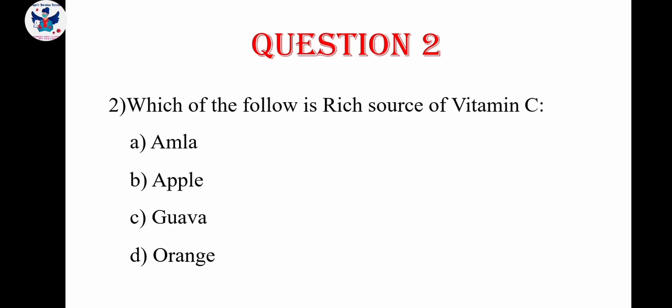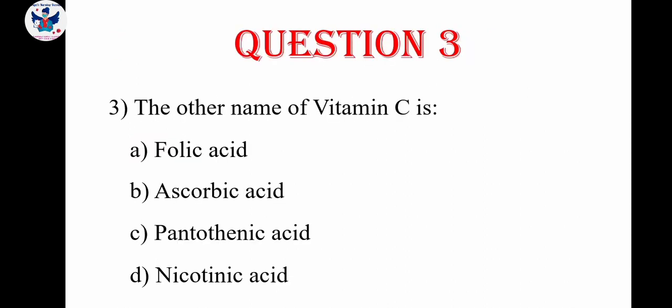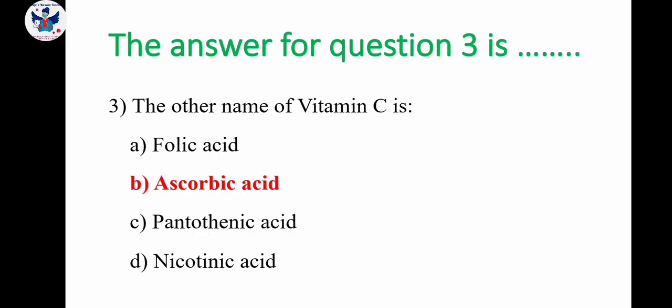Second question: which of the following is a rich source of vitamin C? Options are amla, apple, guava, orange. The rich source is definitely amla. So the answer is amla. Question number 3: the other name of vitamin C. The correct answer is ascorbic acid.